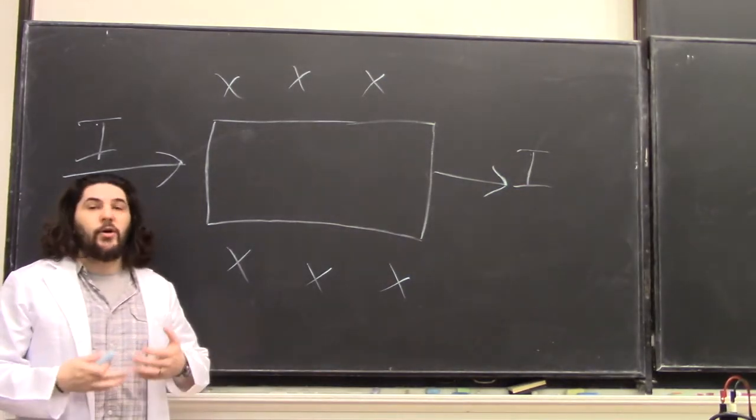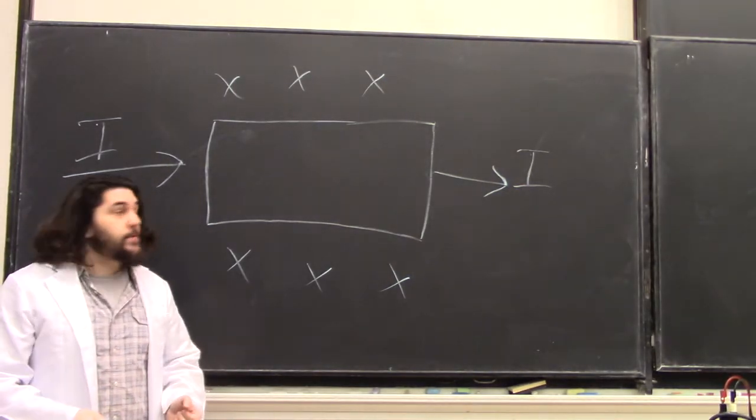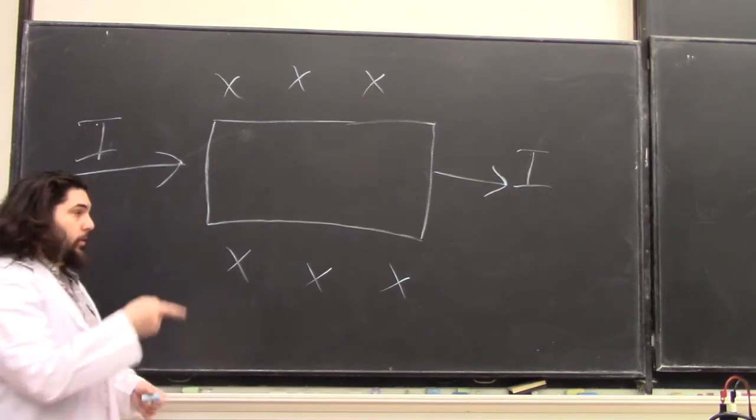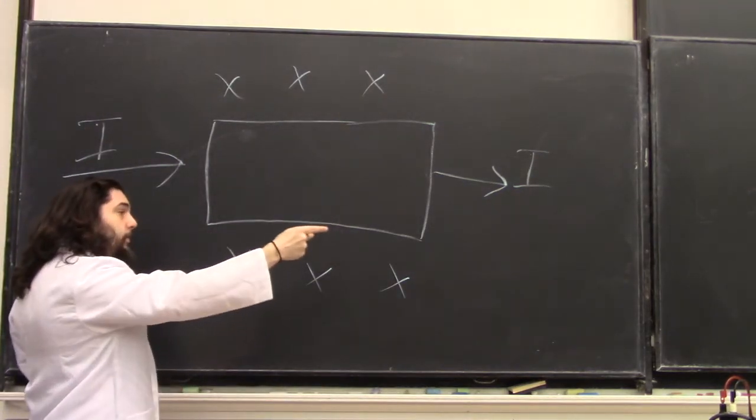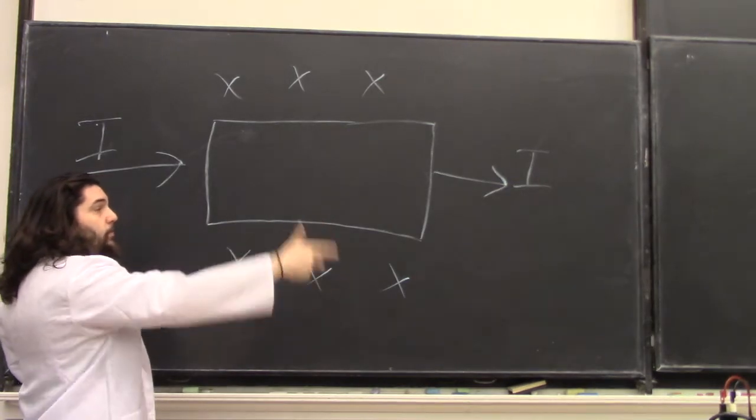The current is going to undergo an I cross B Lorentz force, and by the right-hand rule, currents pointing that way, the magnetic field is pointing into the board, the force will be pointing up.